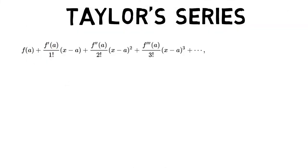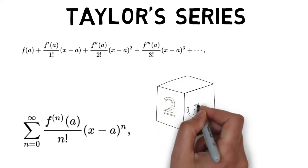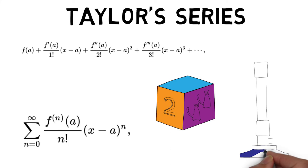the Taylor series of a real or complex valued function f that is infinitely differentiable at a real or complex number a, is the power series which can be written in the more compact sigma notation as summation of f power n of a upon n factorial into x minus a, the whole raised to n, from n equals to zero to infinity. Here, f power n of a denotes the nth derivative of f evaluated at a.